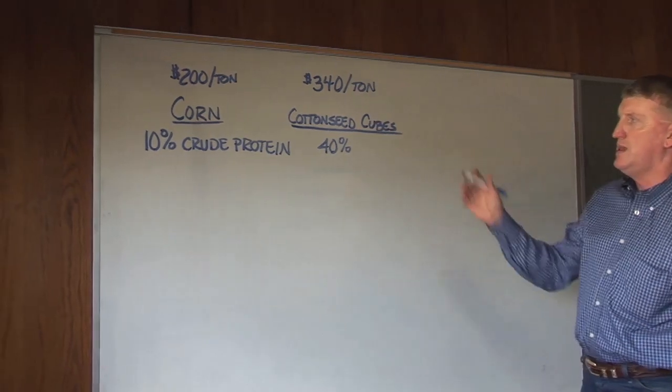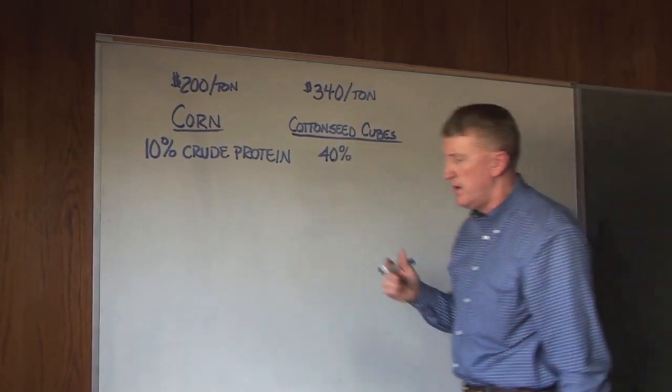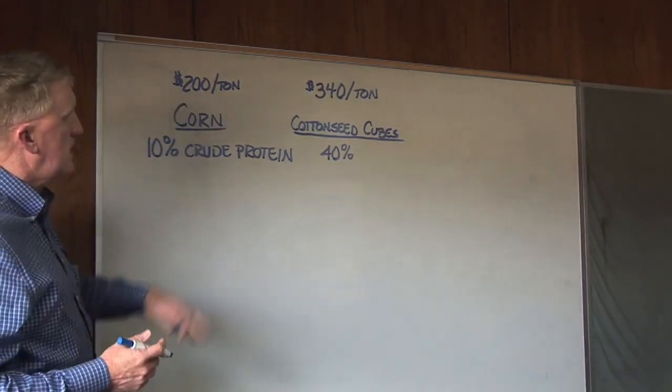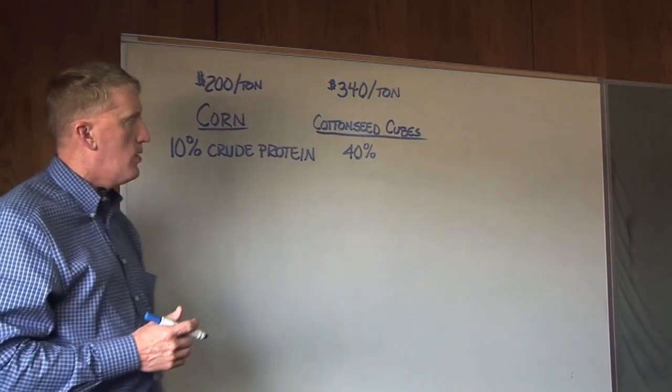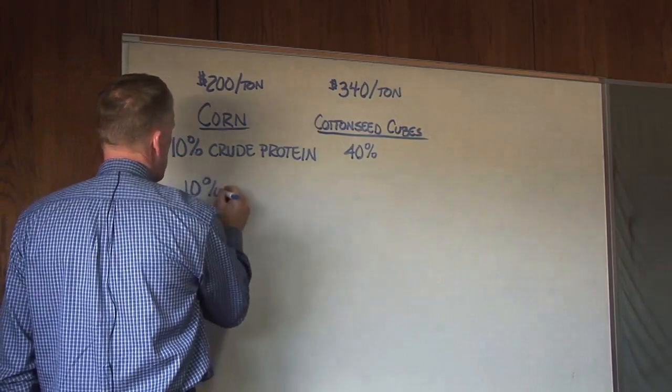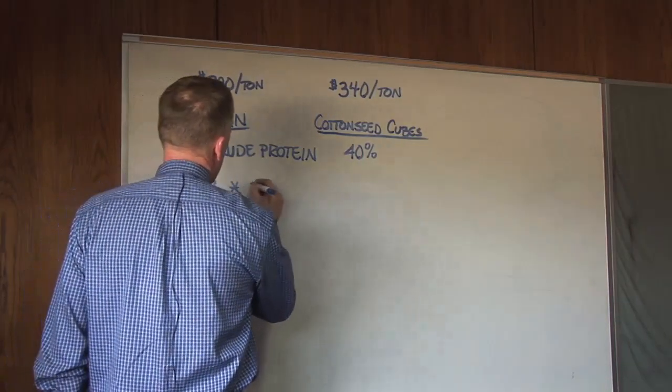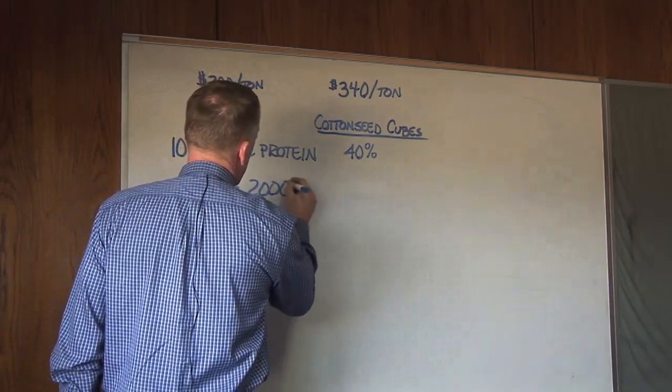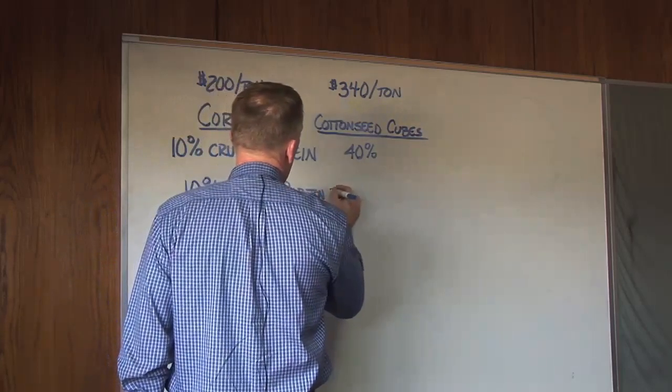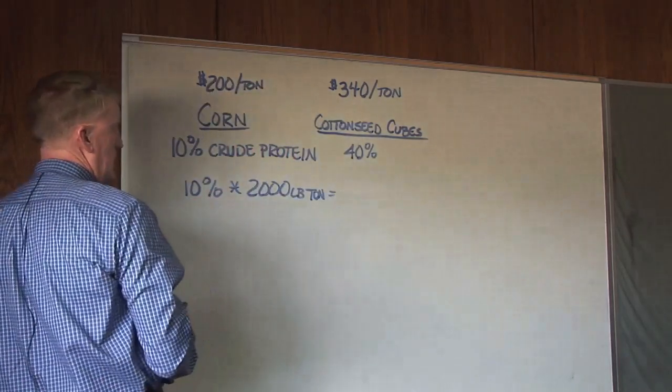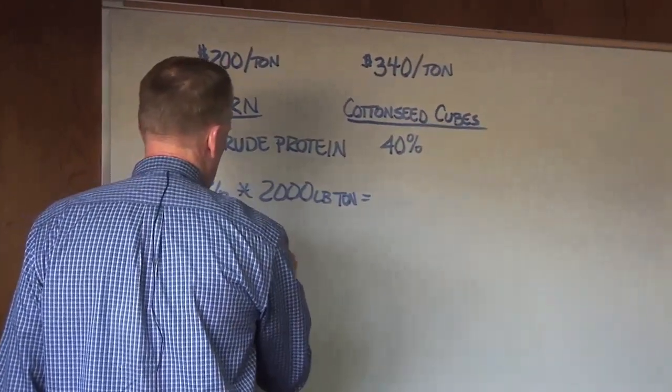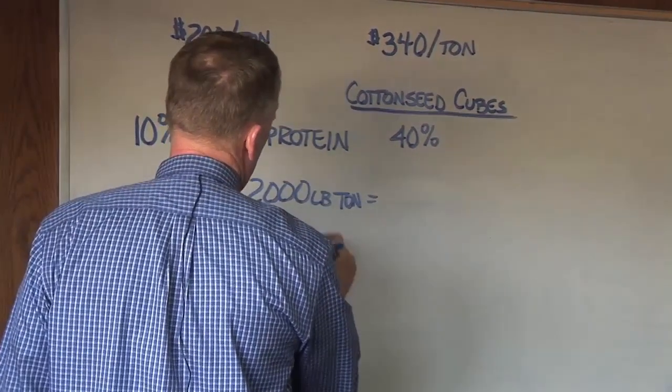So the first thing that we have to do in any of these comparisons is we have to figure out how many pounds of crude protein there are in a given quantity of feed. And so in this example, since we have them both on a per ton basis, all you do is multiply the 10%, multiply 10% times the 2,000 pounds to find out how many pounds of protein there are in a ton of corn. And we find out that if you multiply 10 times 2,000, there's in effect 200 pounds of crude protein per ton of corn.